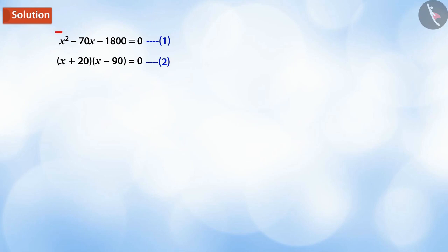On solving further, we will equate each of the linear factors to zero, which gives us x + 20 = 0 or x - 90 = 0. That is, x = -20 or x = 90.